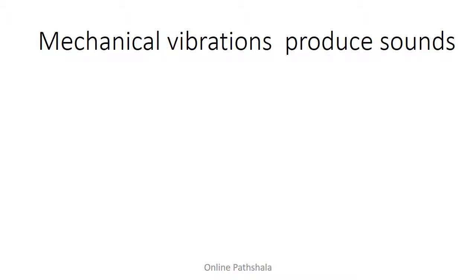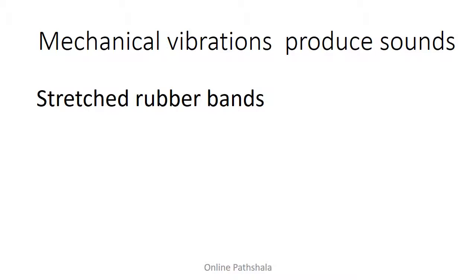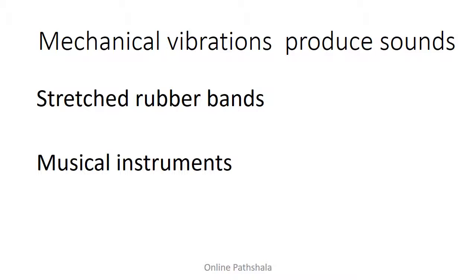Looking at specific examples: the first one is a stretched rubber band. When you have a stretched rubber band and you pull it, it vibrates and creates a buzzing sound. This is an example of a vibration producing sound. The second example is musical instruments — for example, a flute produces sound when wind is blown into it, and a violin produces sound from its strings. Something has to vibrate to produce the sound.